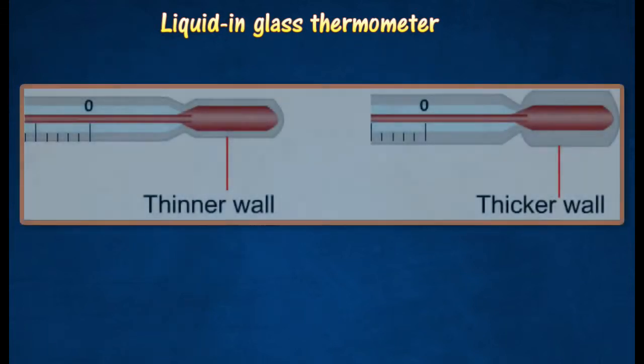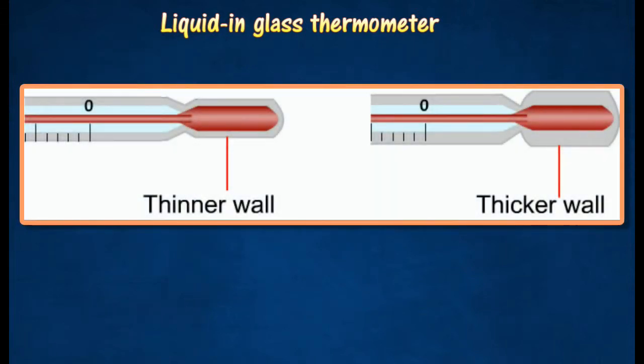The sensitivity of a liquid and glass thermometer can be increased by having a thin wall bulb. A thermometer with a thin wall is more sensitive than a thermometer with a thicker wall.